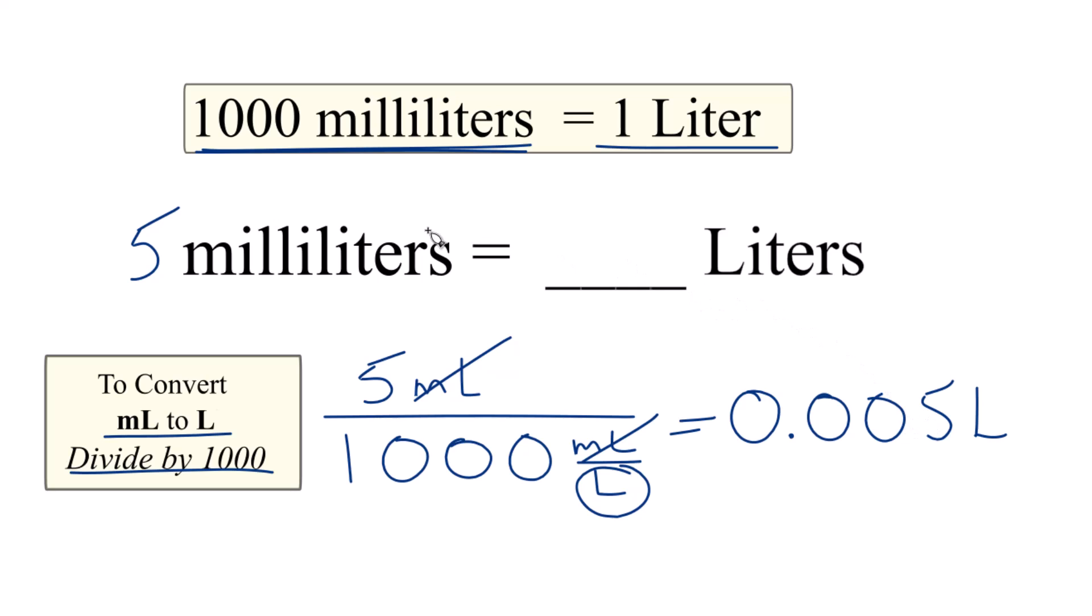In answer to our question, when we convert five milliliters to liters, we get 0.005 liters. That's it. It's Dr. B. Thanks for watching.